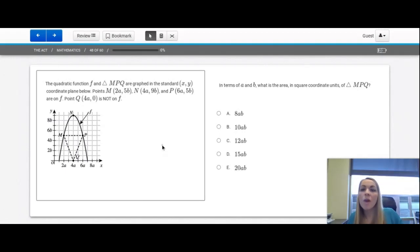Question number 48. The quadratic function F and triangle MPQ are graphed in the standard XY coordinate plane below. Points M, 2A, 5B, N, 4A, 9B, and P, 6A, 5B are on F, this quadratic equation. Point Q, 4A, 0 is not on F. Question 48 asks us, in terms of A and B, what is the area in square coordinates of triangle MPQ? What does in terms of A and B mean? That means that you're simply going to have A and B in your solution. So the goal of this is to find the area of the triangle. So this looks really scary, but all you're doing is one half base times height, because that's the area of a triangle.